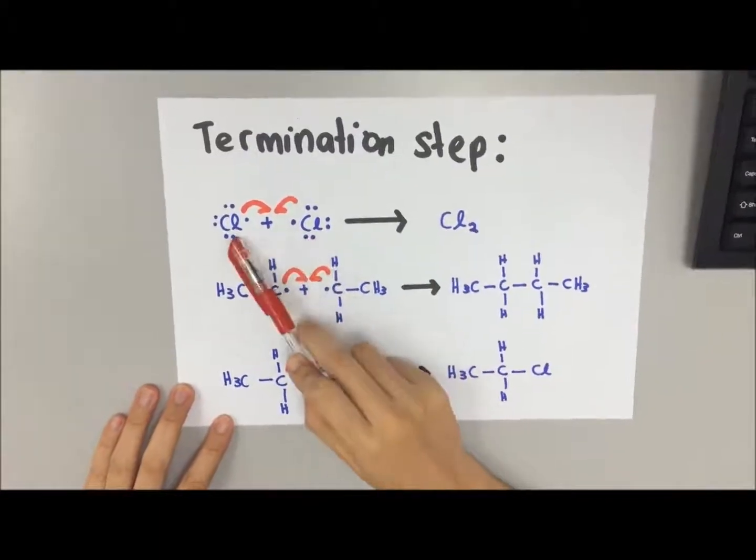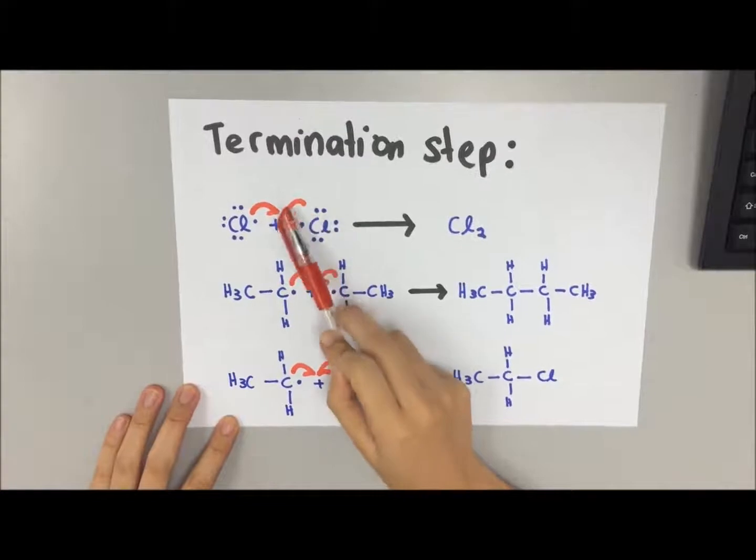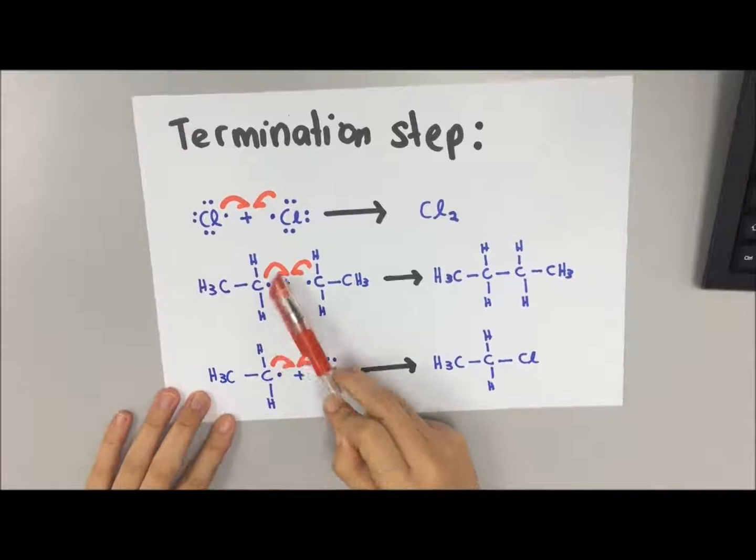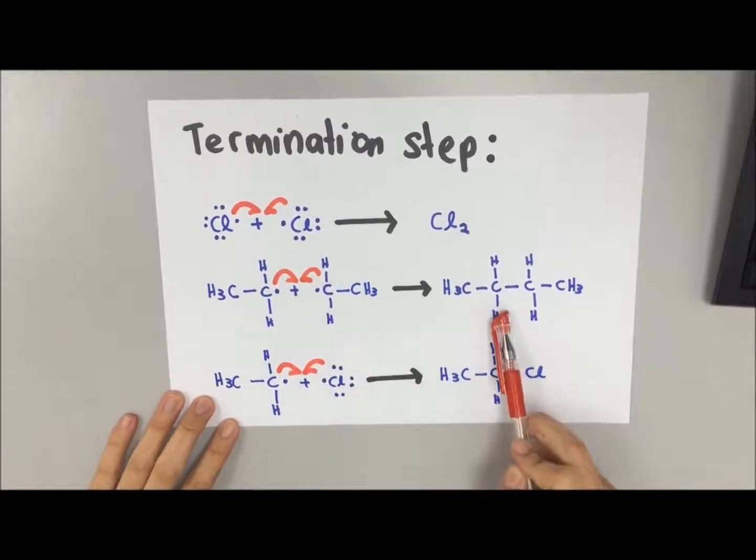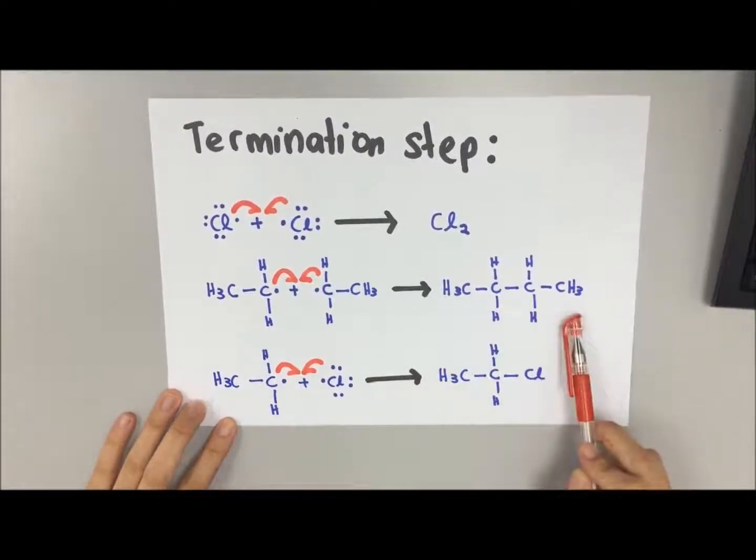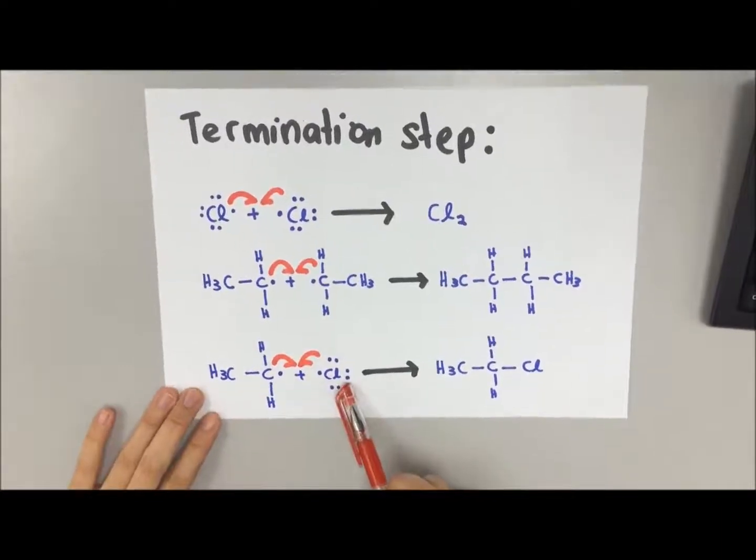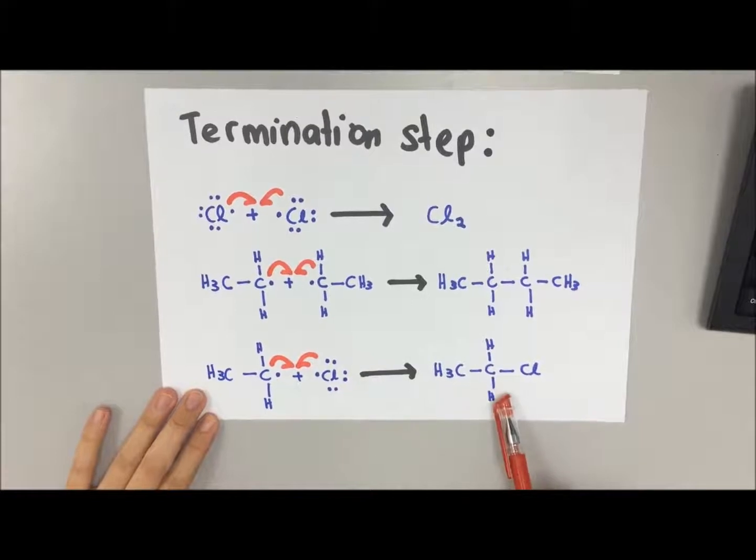From here you can see that both free radical Cl will combine together to form Cl₂, and then the ethyl radicals will combine again to form a neutral compound here.